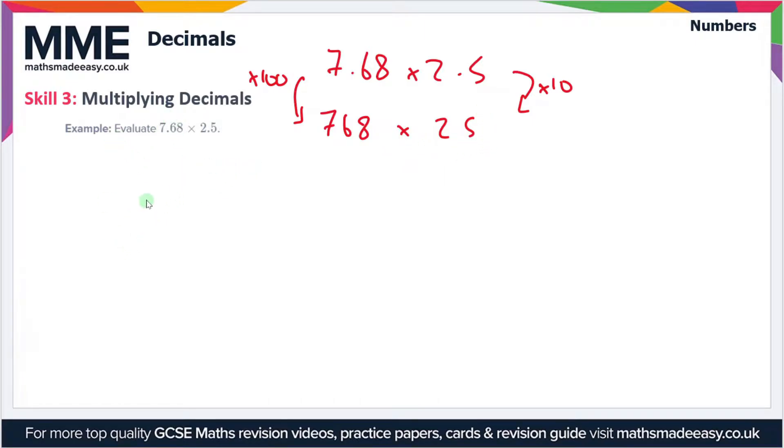So now let's do 768 times 25, which you can do by any means of long multiplication. I'm going to use the grid method here because it's my preferred method. So we've got 768, you can use the column method if you prefer that, and this is just the way I prefer to do long multiplications.